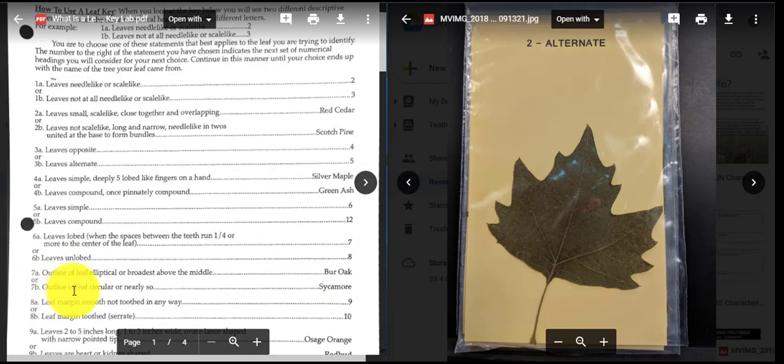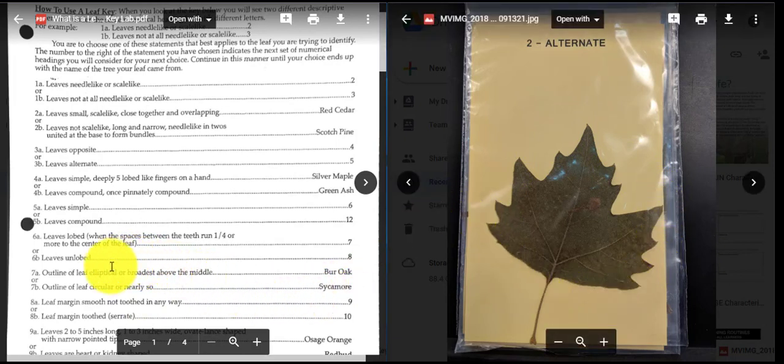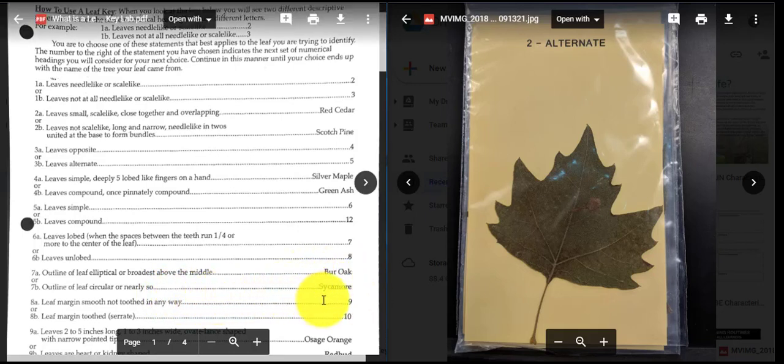So that leaves me with an outline of leaf that's circular or nearly so. And again, if I connect the teeth here, generally, it's going to give me a circular shape. So that's nearly so, and that's good enough. So as I take a look, I move over to the side and I see that I have a sycamore leaf.